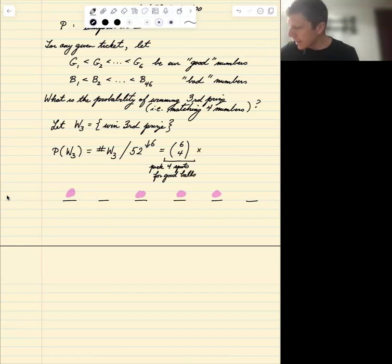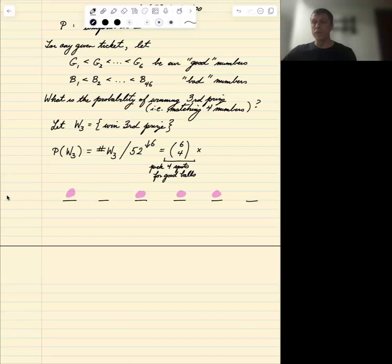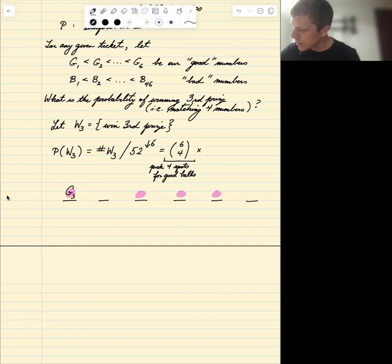And then we have to pick a four permutation of the good balls. So this might be G3, G1, G6, G4. How many ways? Now this could also be G1, G3, G6, B4, etc. So the order matters. It's a four permutation of six: six falling factorial four.